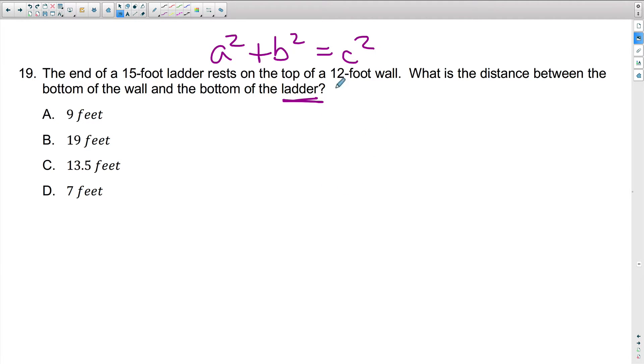Okay, so let's draw it out based on what we see in the question. It says here we have a 12-foot wall. Well, I know that walls go up and down, so I'm going to put my 12 here. And then it says the end of a 15-foot ladder rests on top of the 12-foot wall. And I'm going to have my ladder leaning up against the wall, and it says it's 15 feet. What is the distance between the bottom of the wall and the bottom of the ladder? So that's going to be this side right here.